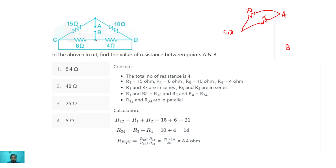From point B to C, the 6 ohm resistor is connected. And from point B to D, a 4 ohm resistor is connected. Now we have to calculate the equivalent resistance between point A and point B.